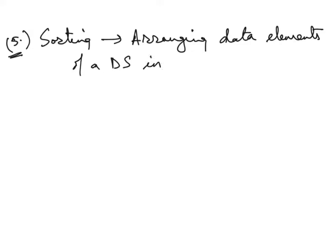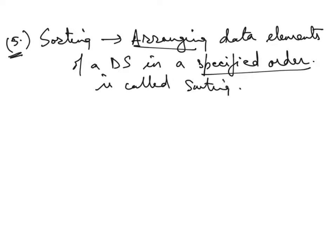Now we talk about the fifth one and that is basically sorting. So what do you mean by sorting? Sort karna, correct. Basically arranging. We talk about arranging the data elements of a data structure in a specified order. So specified order basically can be ascending order or descending order. That's the basic definition. Sorting means arranging them in the specified order, is called sorting.